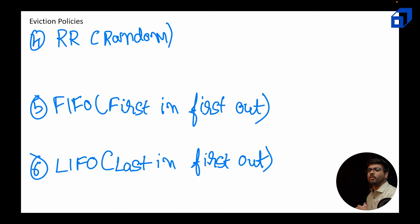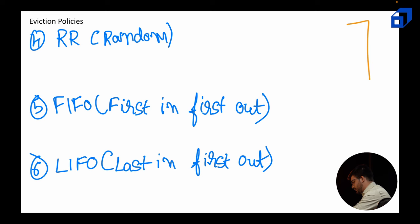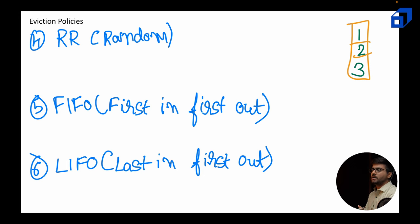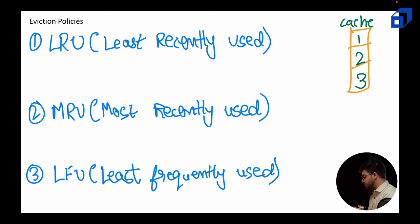The simplest eviction policy is random replacement — whatever element is present, we just pick one and get rid of it, as simple as that. Now First In First Out and Last In First Out — if you are familiar with stacks and queues you might already know these terms. For FIFO and LIFO, irrespective of how many times an element was accessed or when it was accessed, what matters is when it was added to the cache.